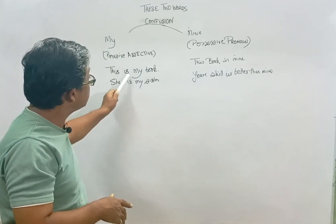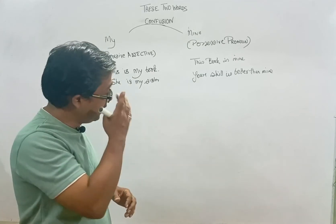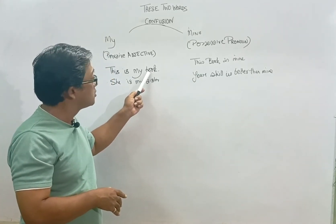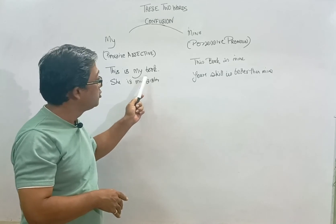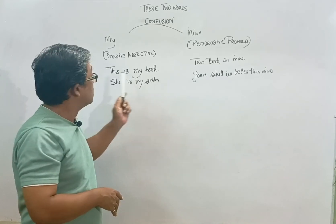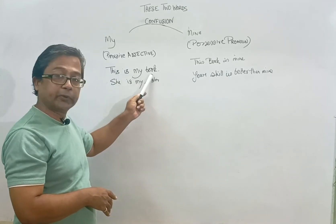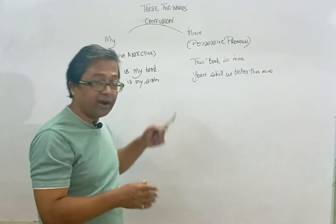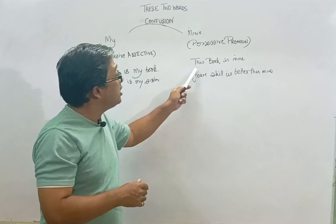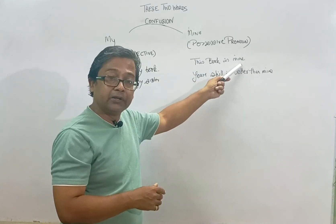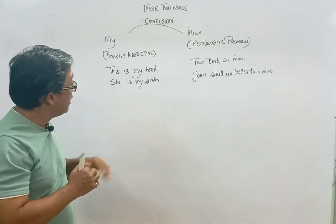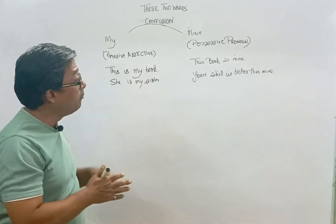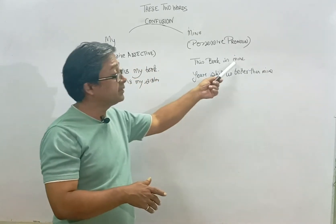For example: 'This is my book.' Here, book is a noun, and my is used before the noun 'book.' On the other hand, you can also write a sentence like this: 'This book is mine.' So my is placed before a noun, while mine is placed at the end of the sentence.